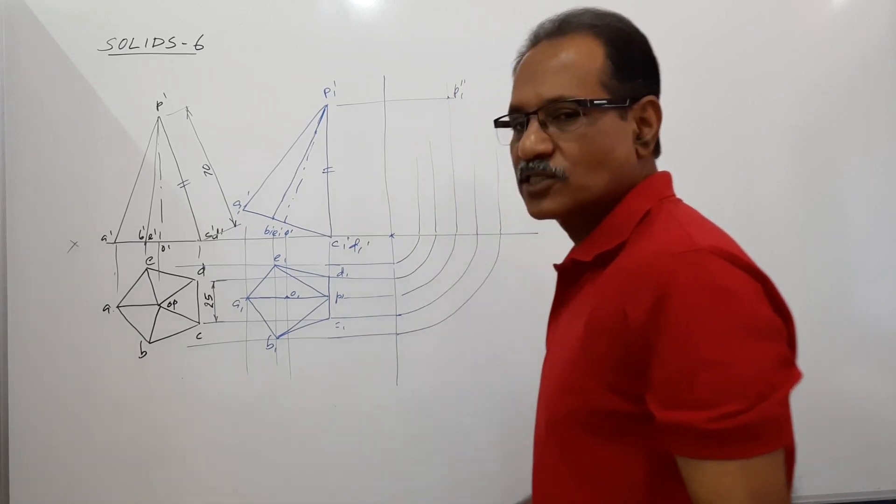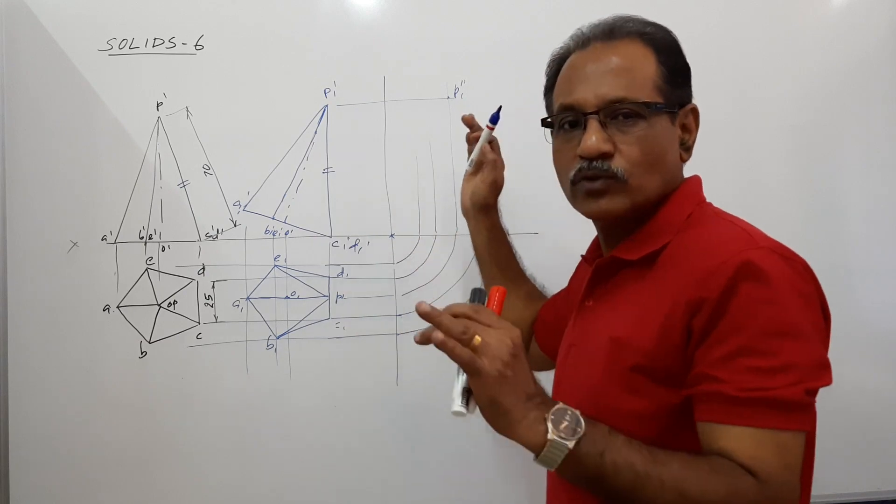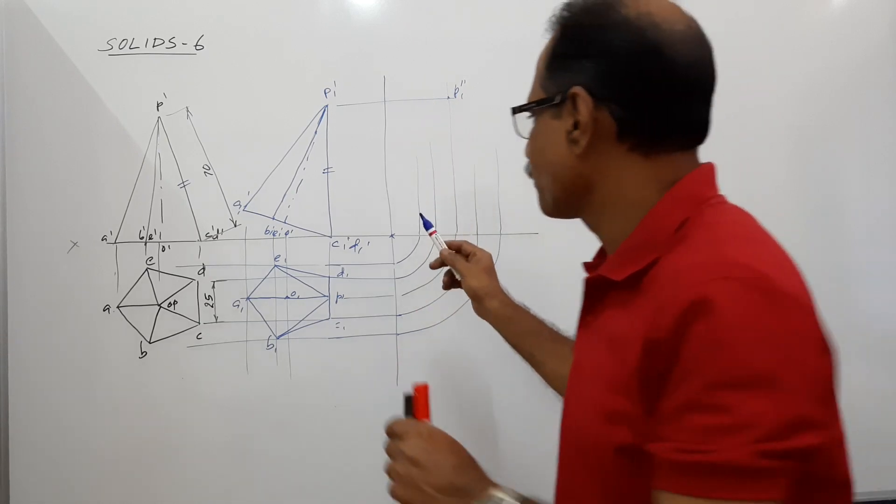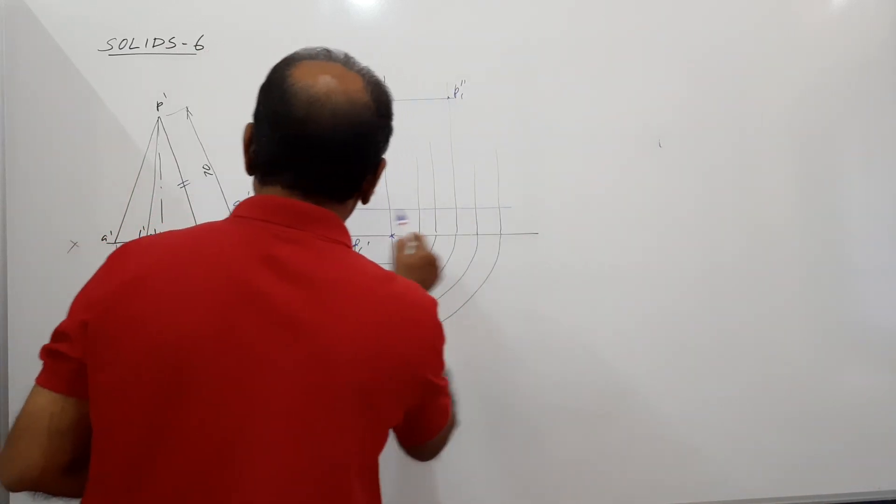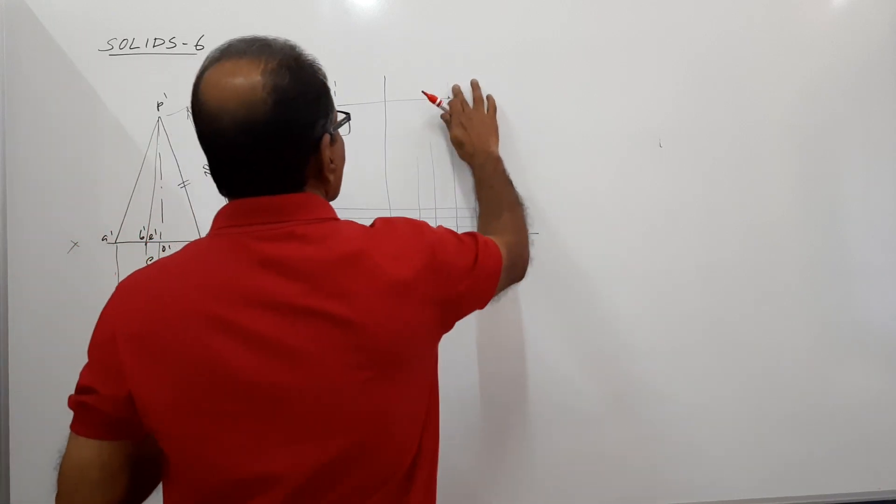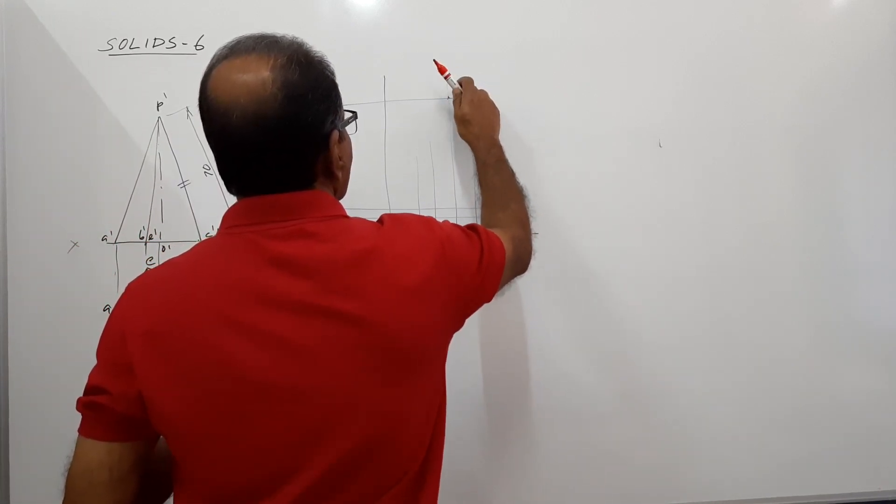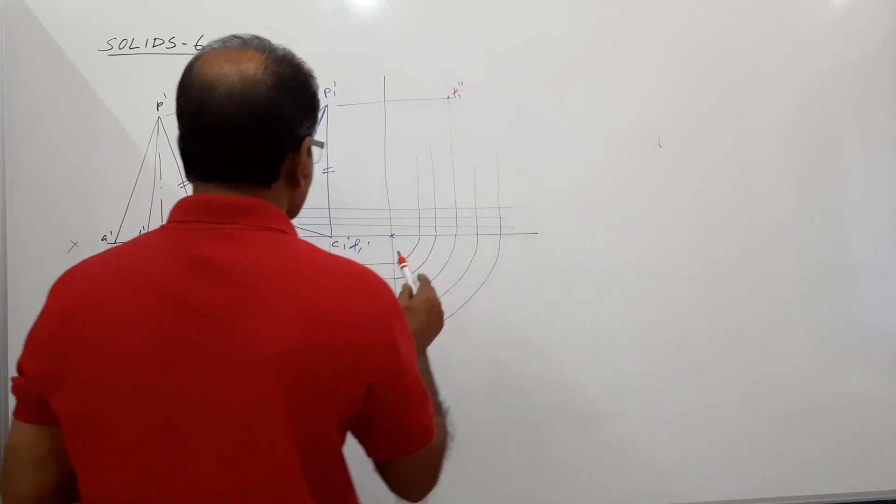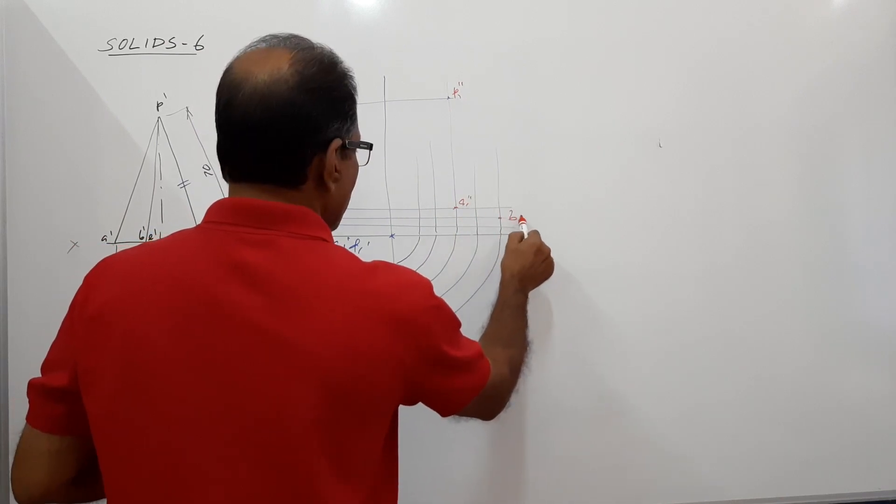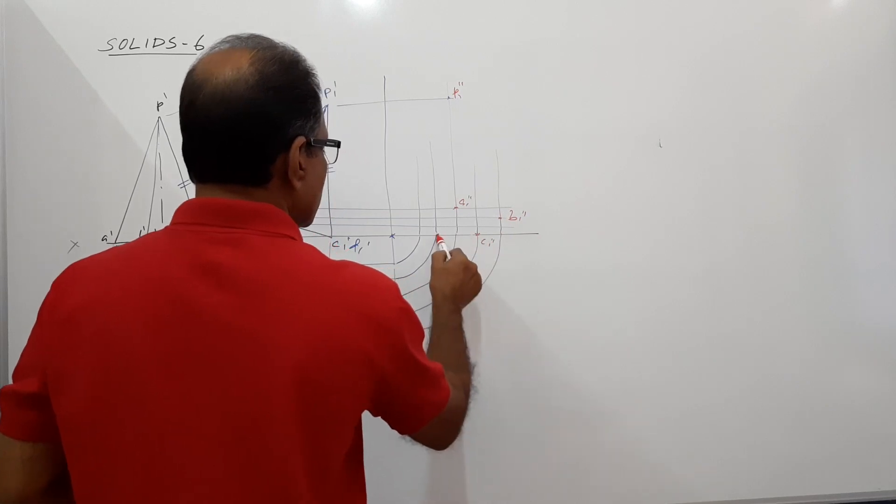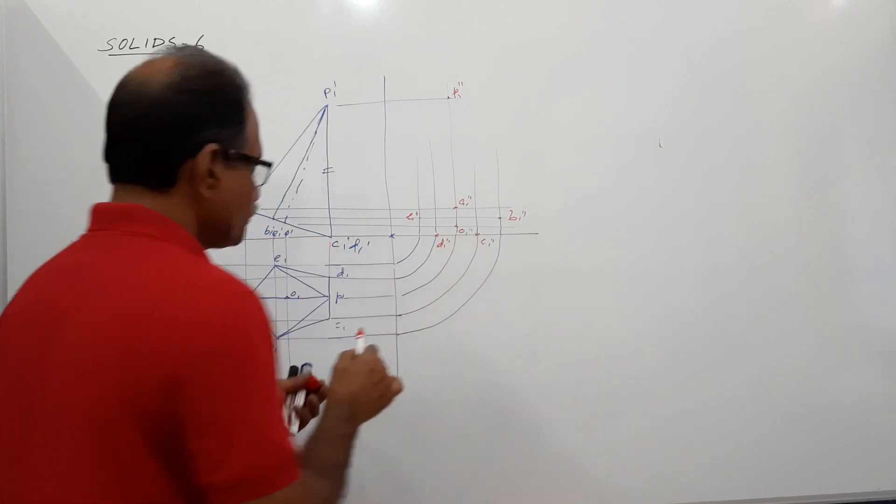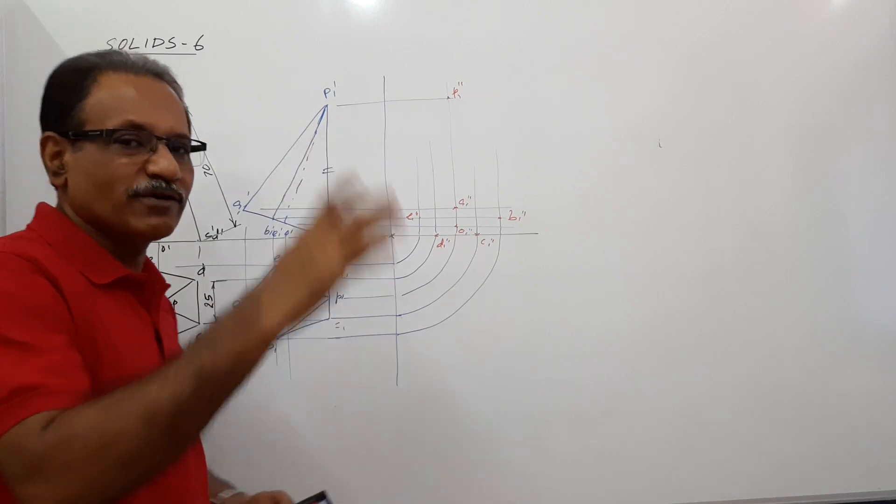P double dash, P1 double dash. One for this drawing, double dash for end view. One suffix for this set of drawings and double dash for end view, not dash for elevation, double dash for end view. A1 double dash, B1 double dash, C1 double dash, D1 double dash, E1 double dash, O1 double dash. You have got 5 plus 2, 7 points.